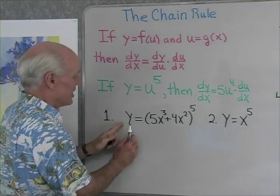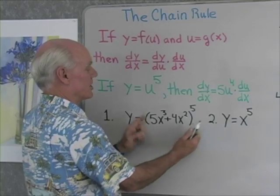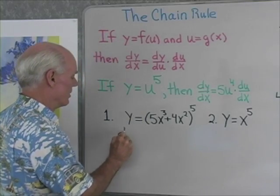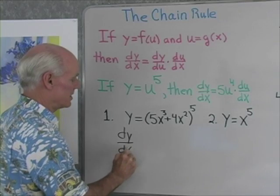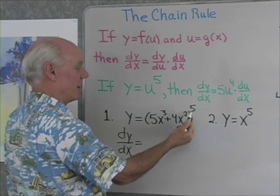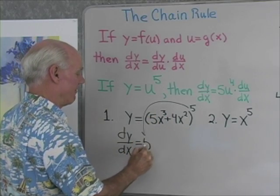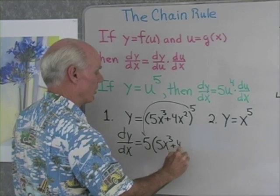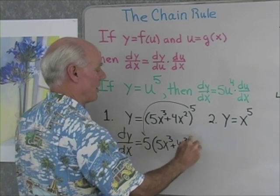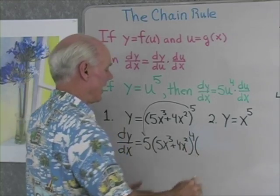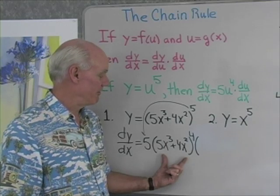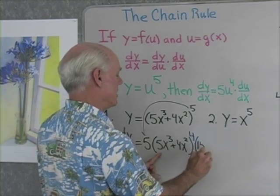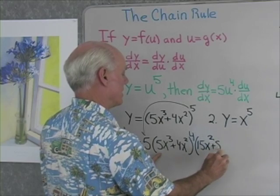Let's try an example. Suppose that y equals (5x³ + 4x²) all raised to the fifth, and I want to differentiate with respect to x. The derivative of y with respect to x: that exponent comes out in front, so I'll have 5 times that base — 5x³ + 4x² — don't change the base, all raised to a power 1 less, which is 4, and then I differentiate the base. So now I have to differentiate 5x³ + 4x² with respect to x, which gives 15x² + 8x.